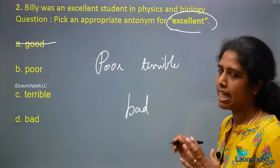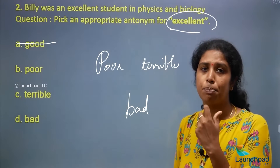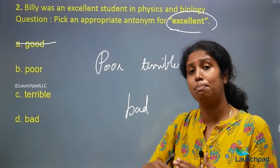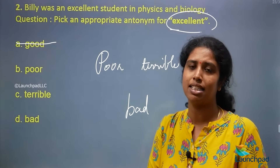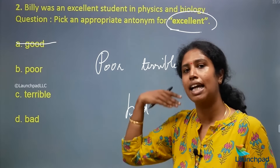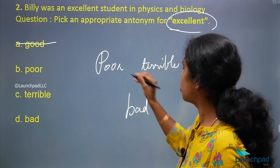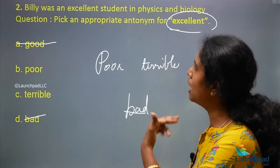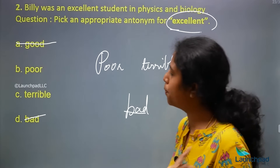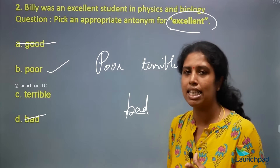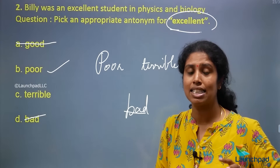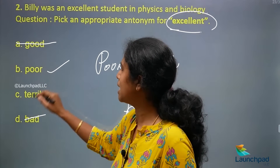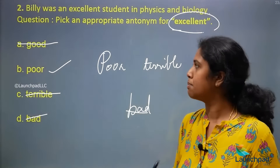Now we need to pick the most appropriate word. 'Excellent' is above 'good' — it is one grade higher. So the opposite pairing would be 'good' and 'bad,' meaning bad cannot be your option. You are left with two options: terrible and poor. 'Poor' is actually the right option because 'excellent' and 'poor' are both graded on the same degree scale. So option B — poor — is the right answer.